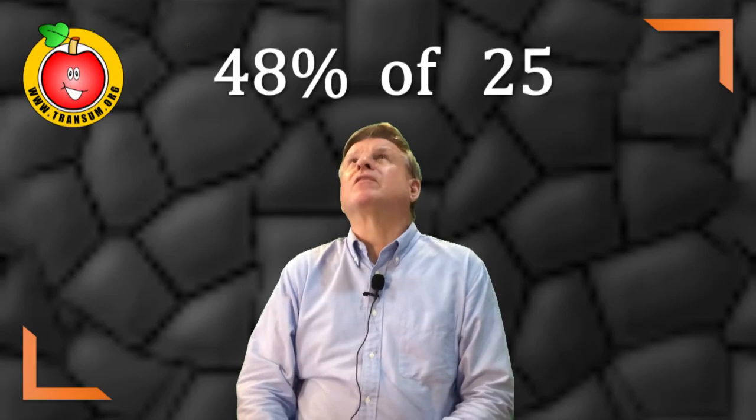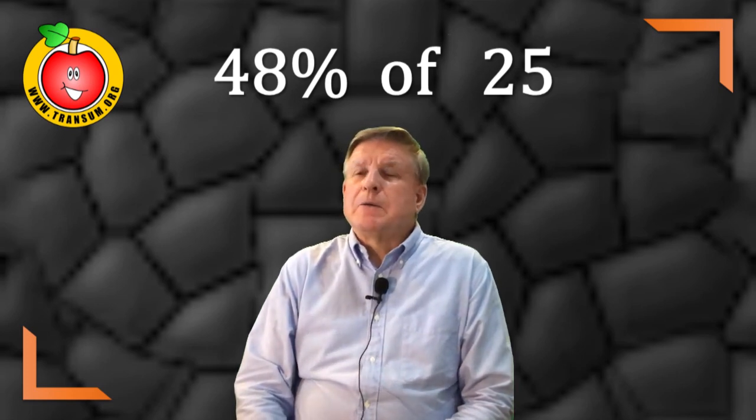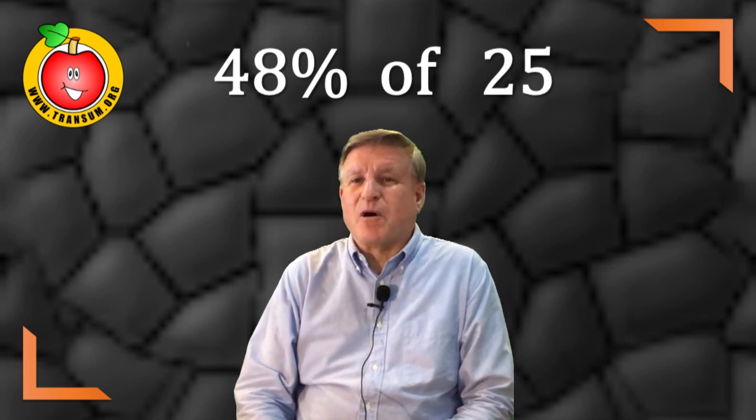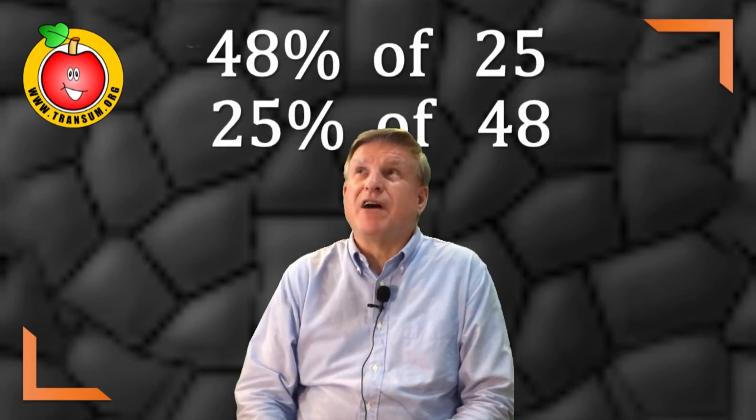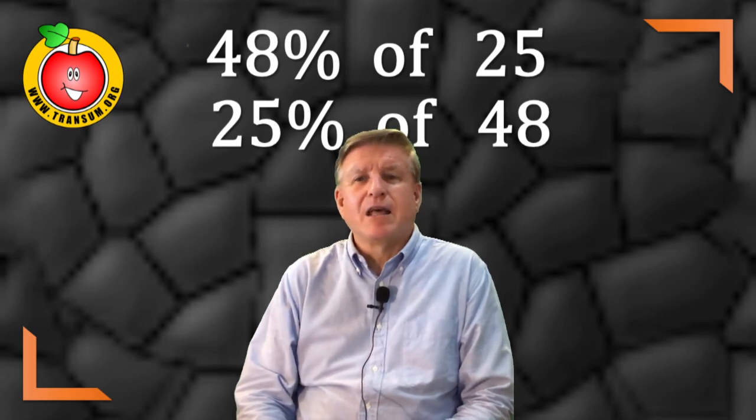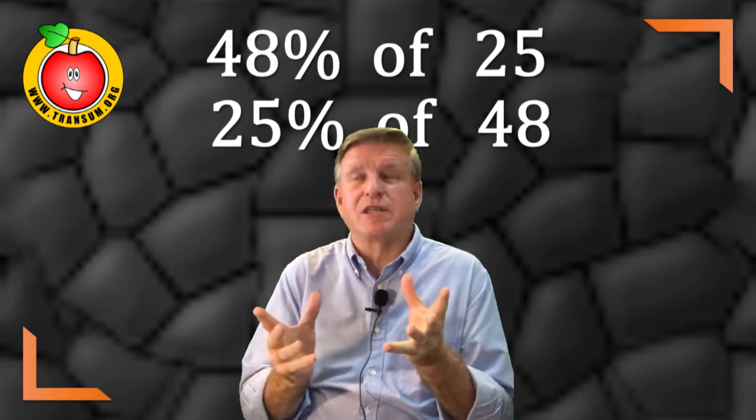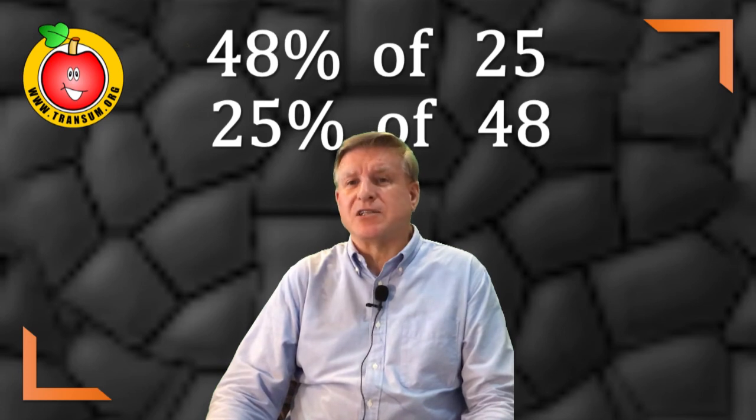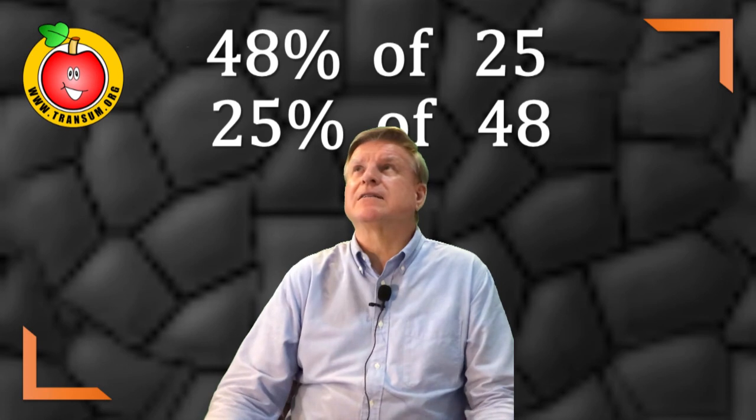What about 48% of 25? Well there's a real neat trick for this one. Because 48% of 25 is actually the same as 25% of 48, because the way you actually calculate percentages, these figures are commutative. You can switch them around. So 25% of 48 is a lot easier to work out. 25% means a quarter. So a quarter of 48 is 12.